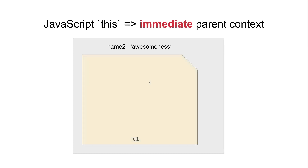Now, if I create a variable, but in this case it is a JavaScript object, or we can say JSON. So, when we are talking about the C1 object, we will be talking about context.